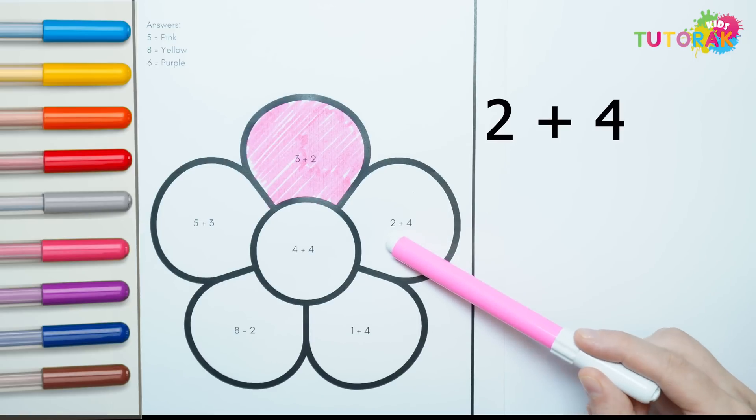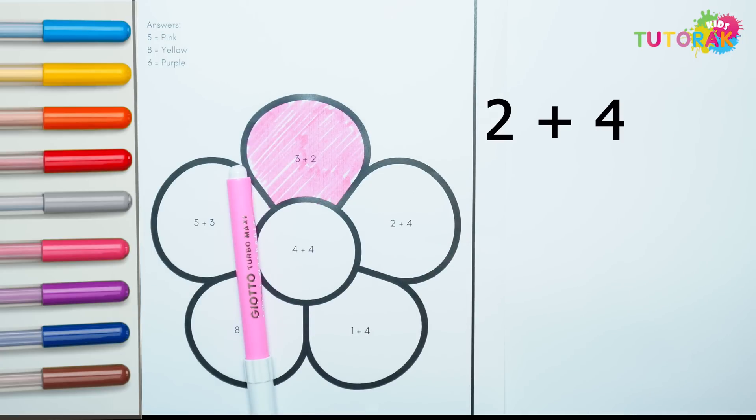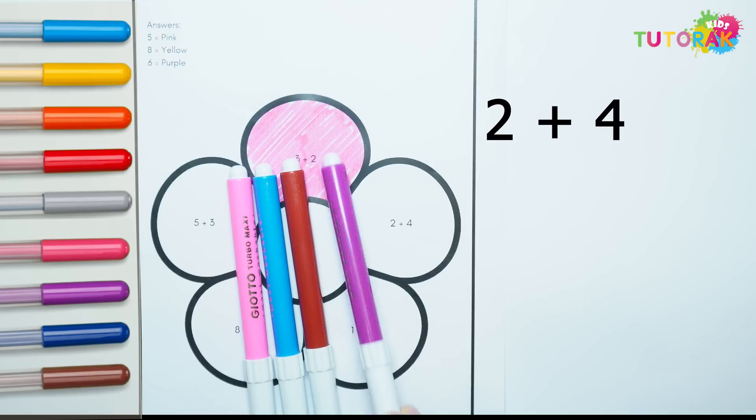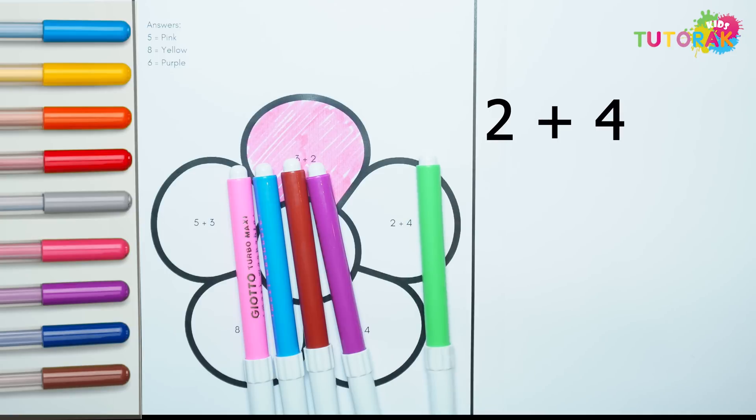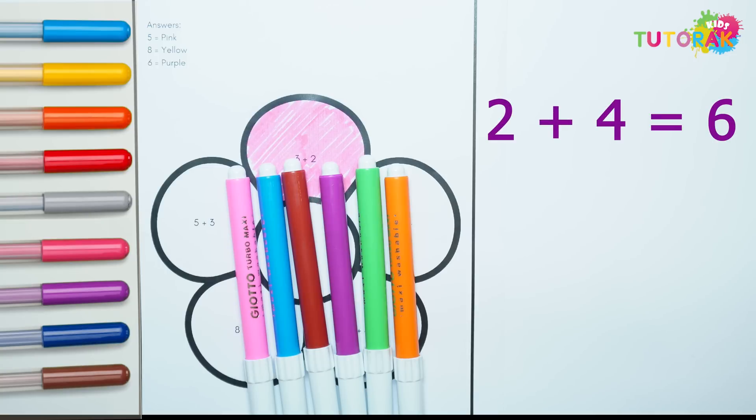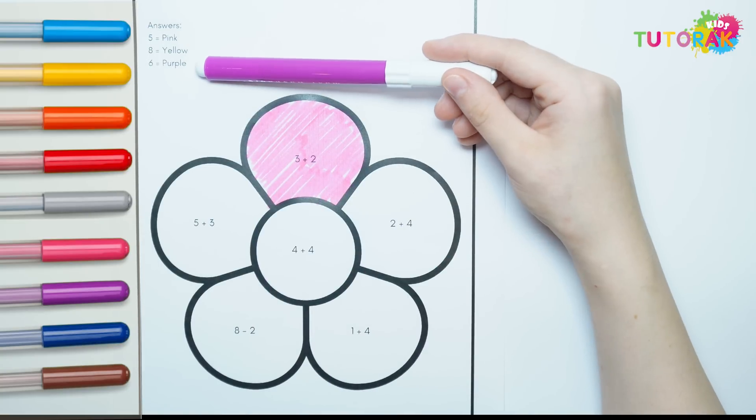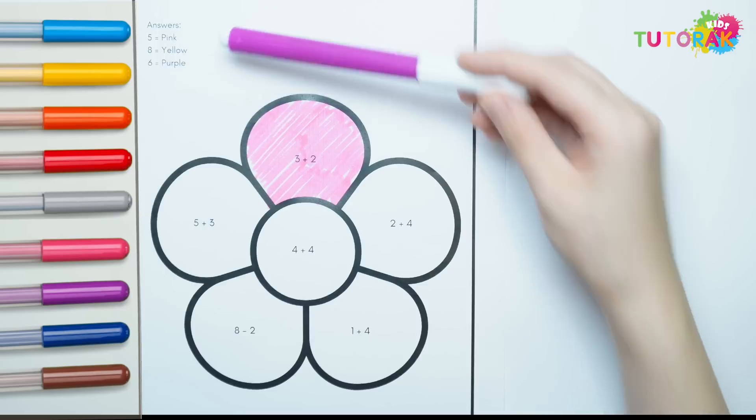Now we have 2 plus 4. 1, 2, 3, 4, plus 1, 2. 1, 2, 3, 4, 5, 6. 6 is color purple.